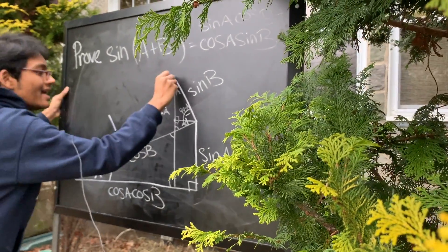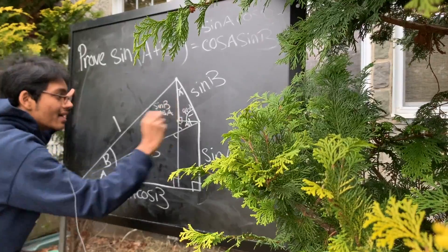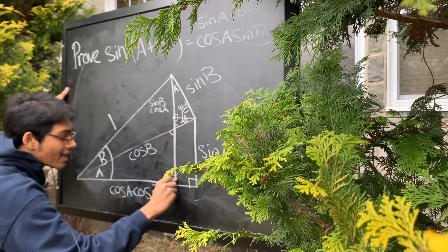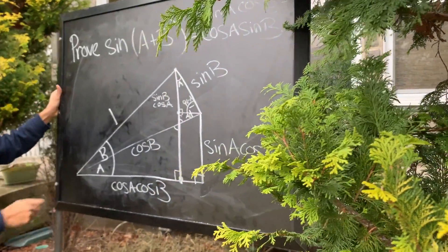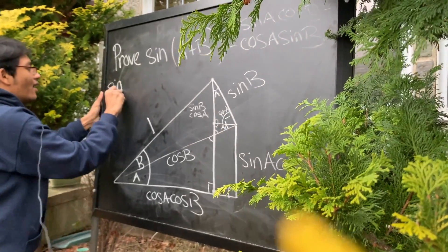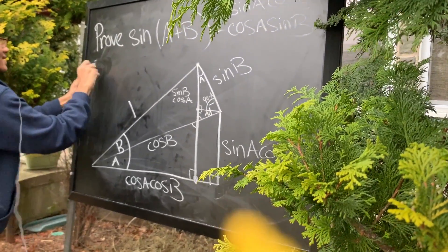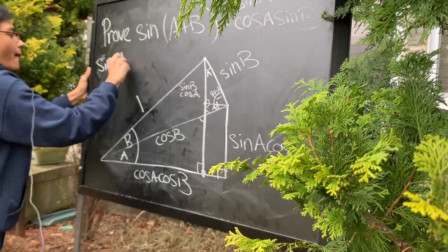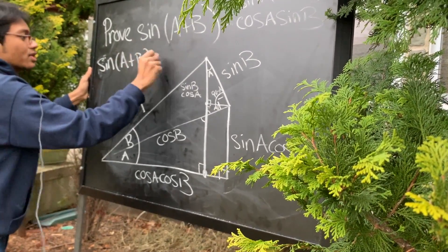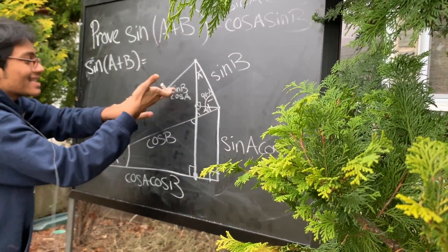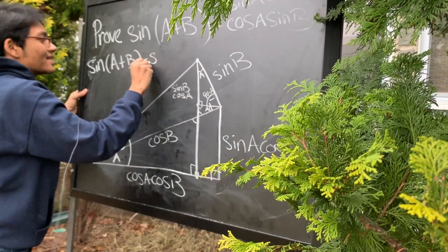Right? Sine of this angle is this leg plus this leg. All right. Well, let's see what that is. Sine of, let's write it nicely. Sine of A plus B is equal to what? Well, what's this leg? This leg is sine of B cosine of A. Sine of B cosine of A.